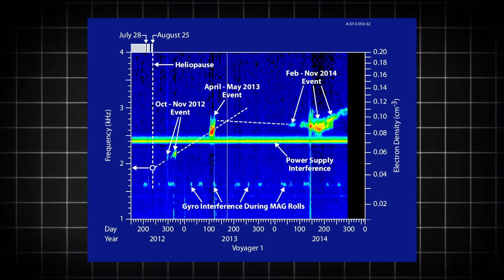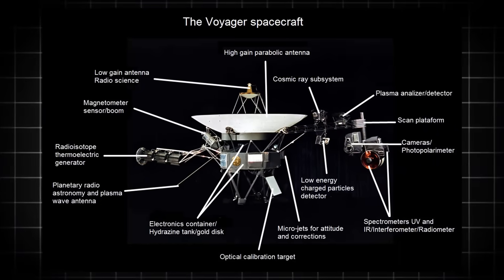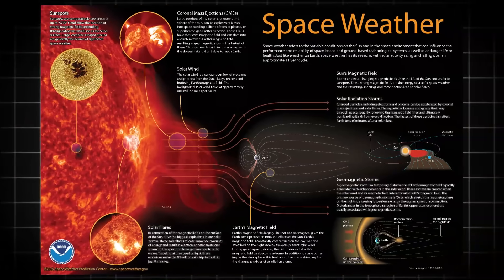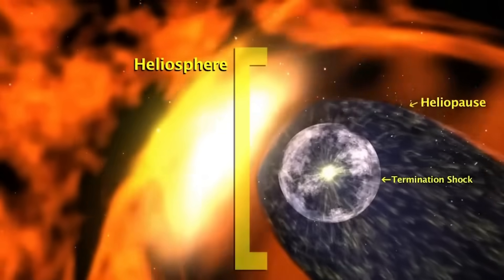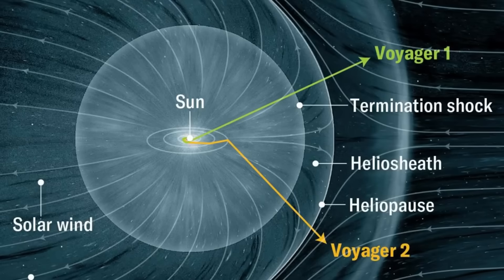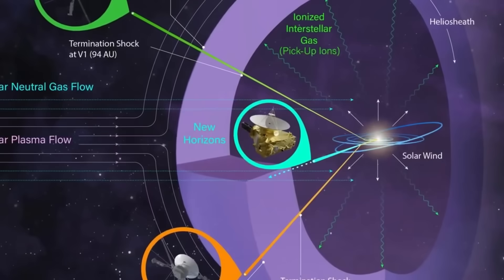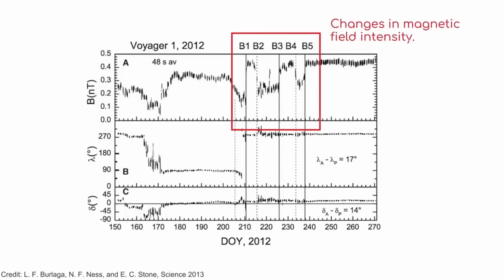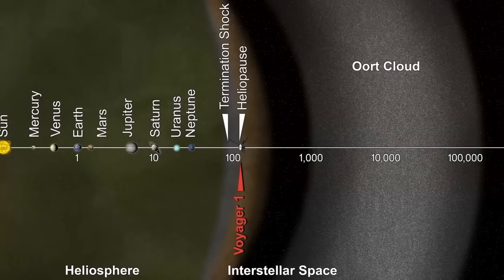When NASA engineers fixed the corrupted memory chip in April 2024, they rerouted its code to spare memory. But what if that corruption wasn't random? What if it was information attempting to express itself through an aging computer? The idea transforms how we think about space exploration. Every probe we've ever sent might be collecting more than just the data we programmed it to gather.